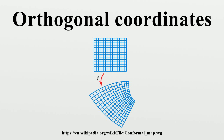The chief advantage of non-Cartesian coordinates is that they can be chosen to match the symmetry of the problem. For example, the pressure wave due to an explosion far from the ground depends on 3D space in Cartesian coordinates. However, the pressure predominantly moves away from the center, so that in spherical coordinates the problem becomes very nearly one-dimensional. Another example is fluid in a straight circular pipe. In Cartesian coordinates, one has to solve a two-dimensional boundary value problem involving a partial differential equation.